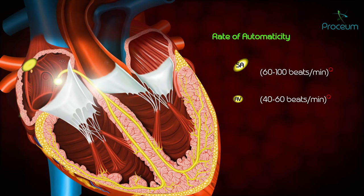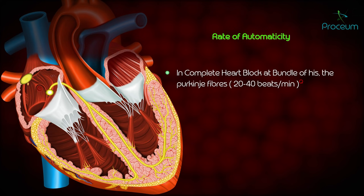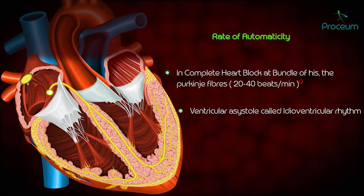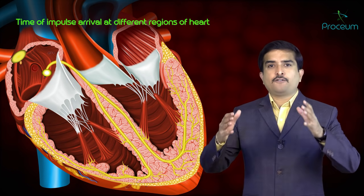If the SA node, AV node, and bundle of His are all non-functional, Purkinje fibers take on a pacemaker role, generating approximately 20 to 40 beats per minute. In incomplete heart block at the bundle of His, Purkinje fibers produce this rate, resulting in a ventricular escape rhythm called idioventricular rhythm. When asystole persists for more than 8 seconds, it leads to a condition called Stokes-Adams syndrome.